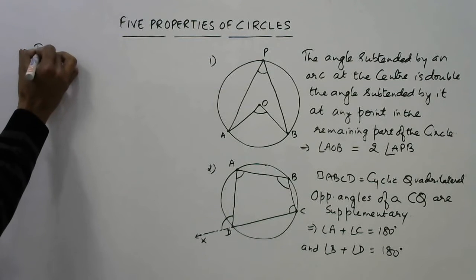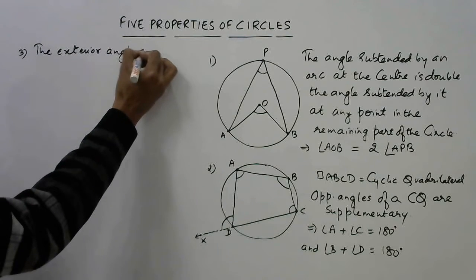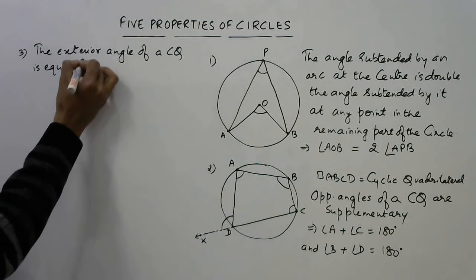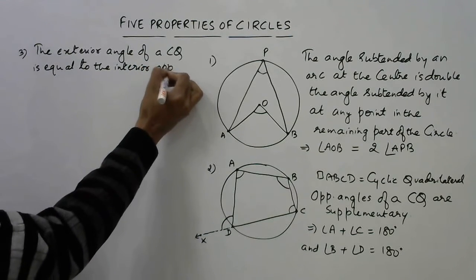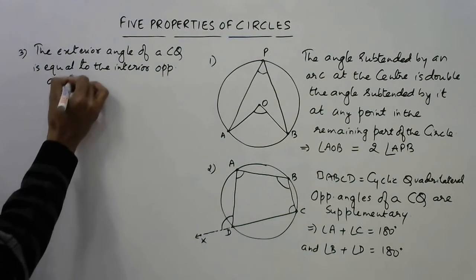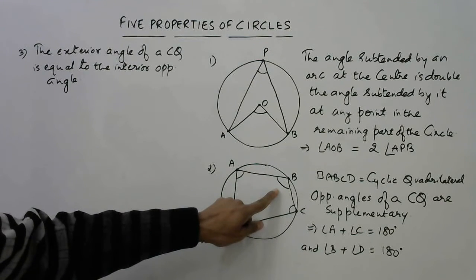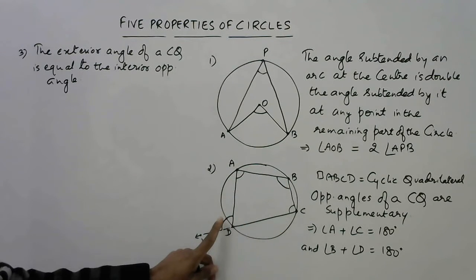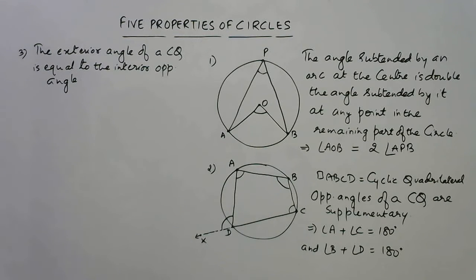The exterior angle of a cyclic quadrilateral is equal to the interior opposite angle. So if this angle is 120 degrees, this angle is also 120 degrees. Opposite angles are supplementary, and exterior angle is always equal to the interior opposite angle. Another very important property of circles.